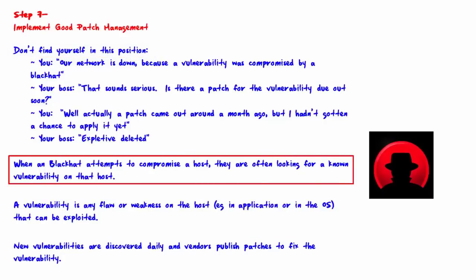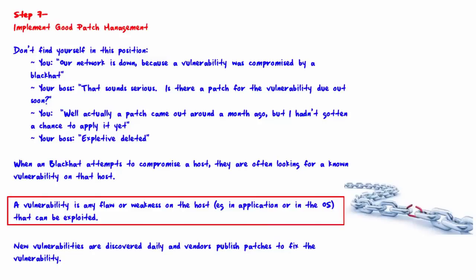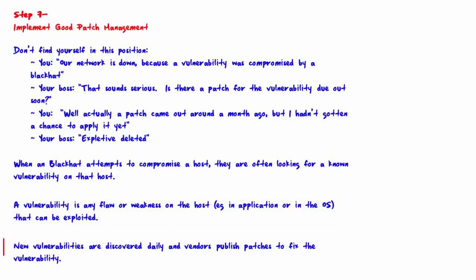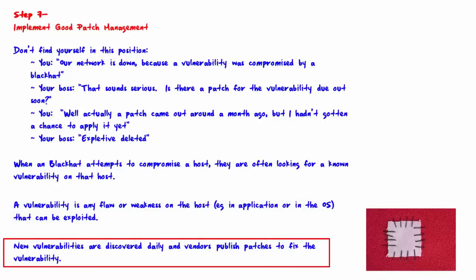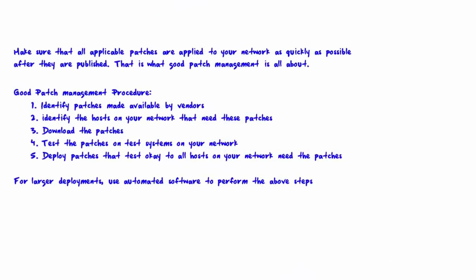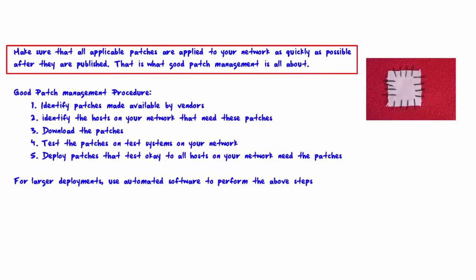When a black hat attempts to compromise a host, they are often looking for a known vulnerability — any flaw or weakness in an application or operating system that can be exploited. New vulnerabilities are discovered daily and vendors publish patches to fix them. Make sure that all applicable patches are applied to your network as quickly as possible after they are published. That is what good patch management is all about.